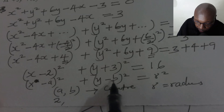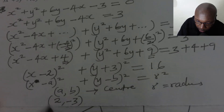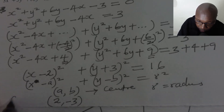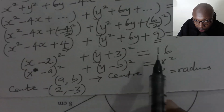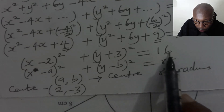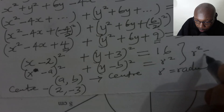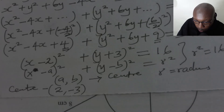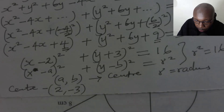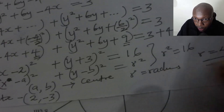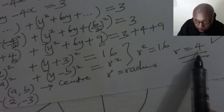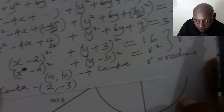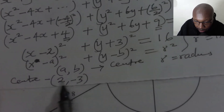Then for b, negative b equals 3, so b equals negative 3. So in this case, the center is (2, negative 3). And for the radius, comparing: radius squared equals 16, so radius equals 4. So that is how you get the center and the radius. We have radius as 4 and center as (2, negative 3).